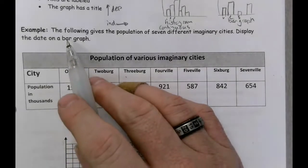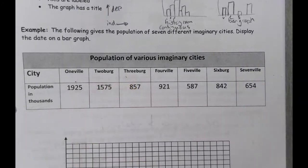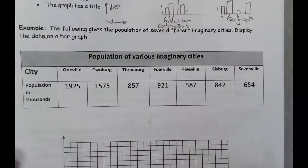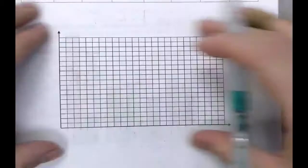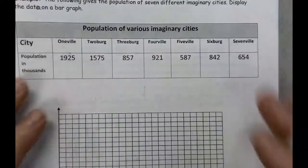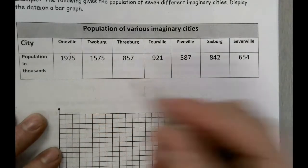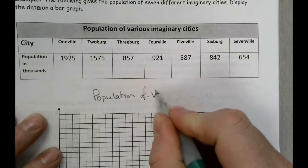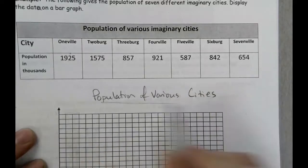This question says: the following gives the population of seven different imaginary cities — display the data on a bar graph. So we're going to take that data and put it on this graph. We're going to have to play with the scale a little bit. But before we do that, we need a title. This is going to be the population of various cities.